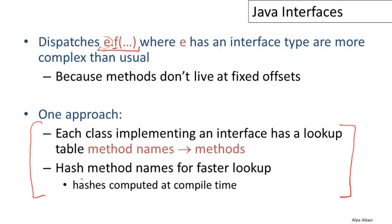And there are other approaches that are more efficient, but that's not particularly important. So here's one way that can work. Each class that implements an interface is going to have a lookup table associated with it that maps method names, the string names of methods to those methods themselves. And then we can hash the method names for faster lookup and we can actually compute those hashes at compile time.